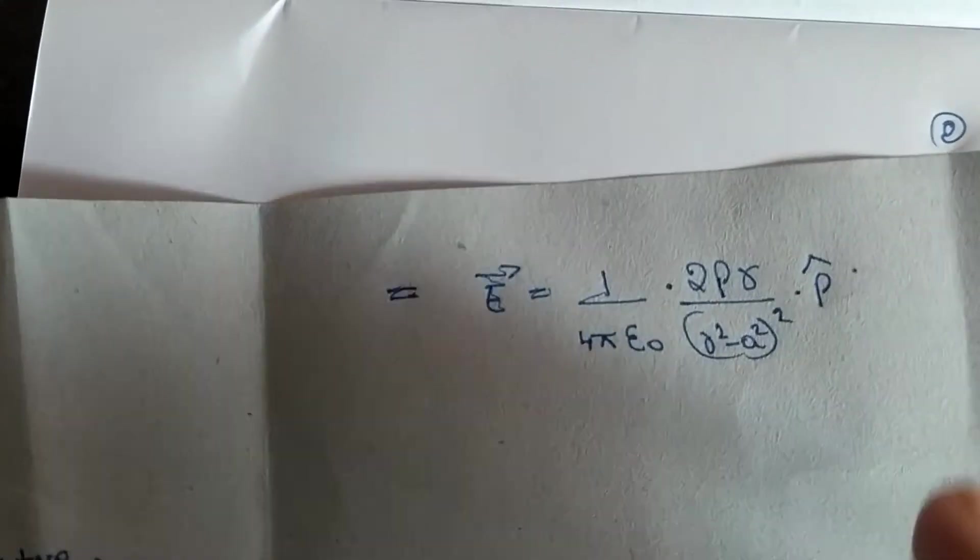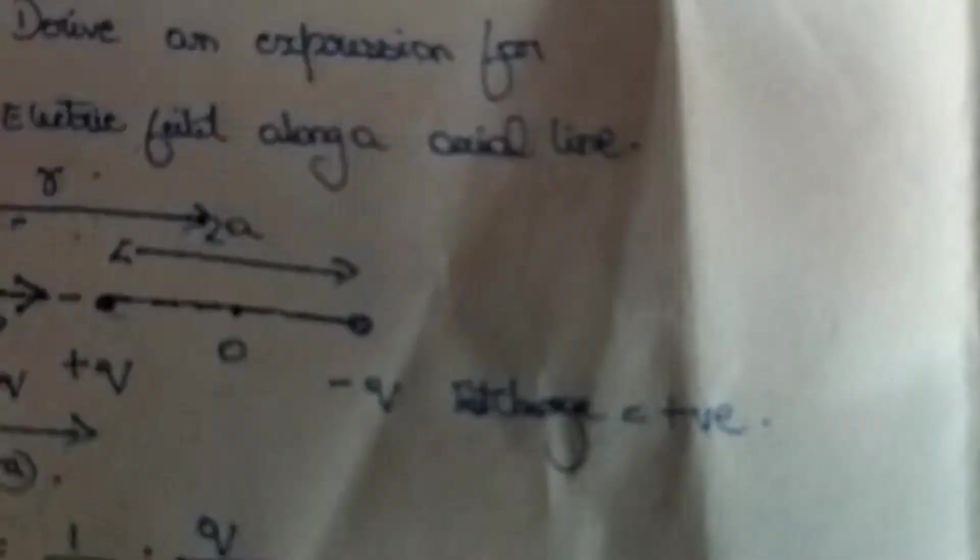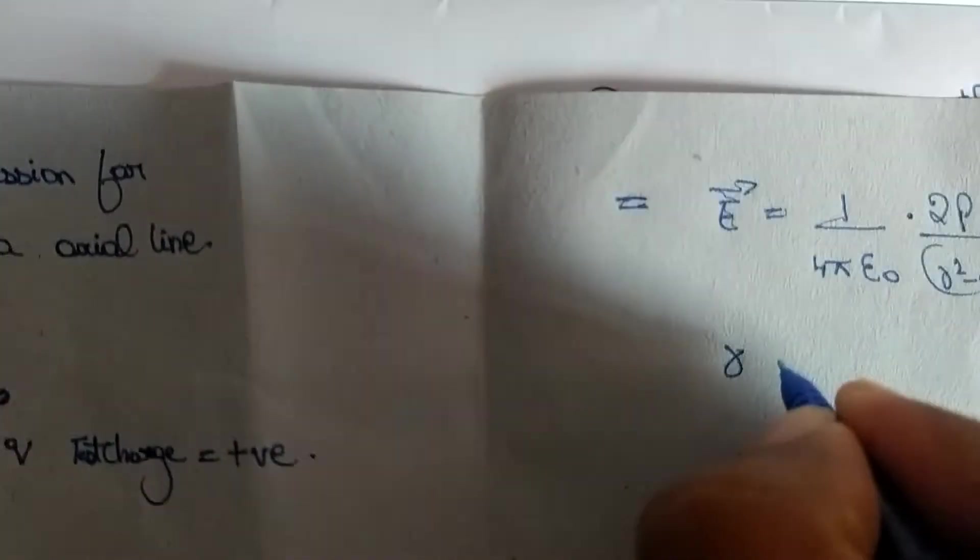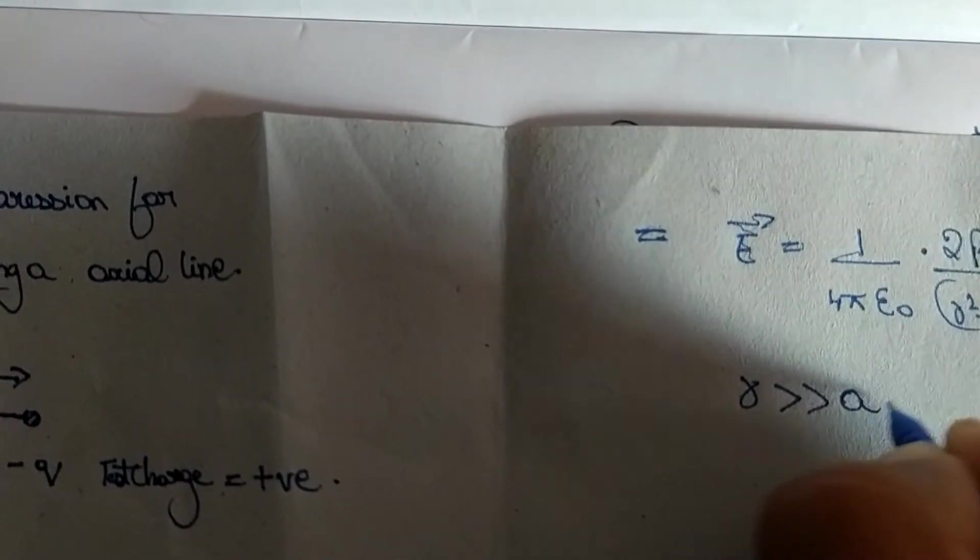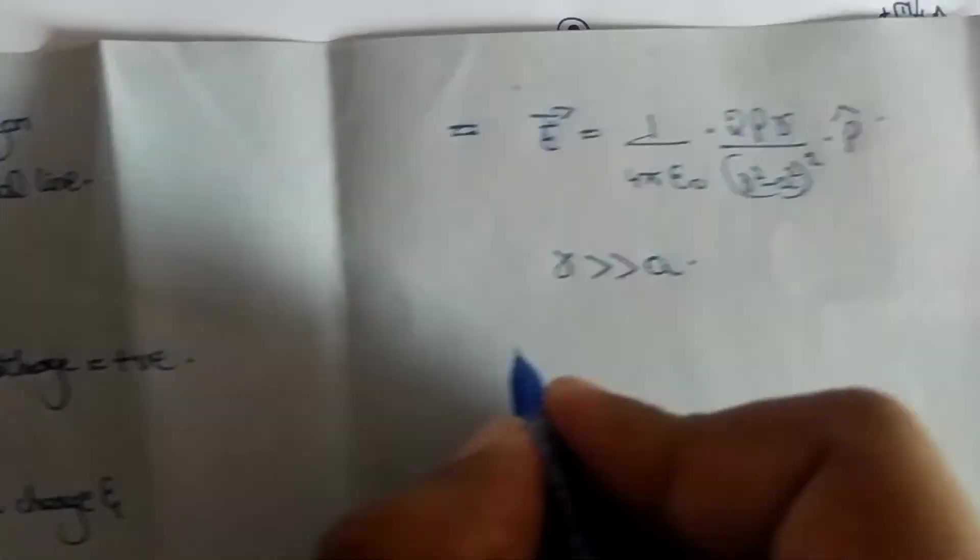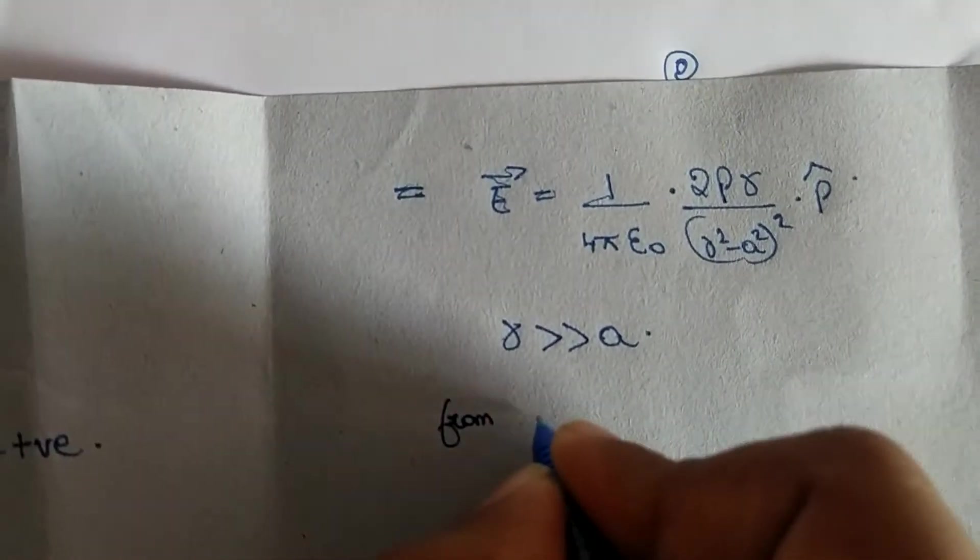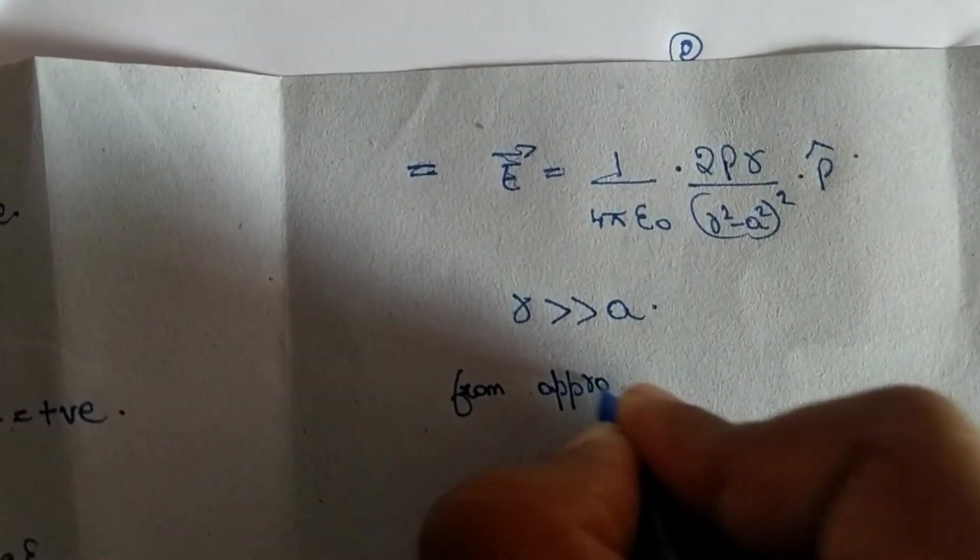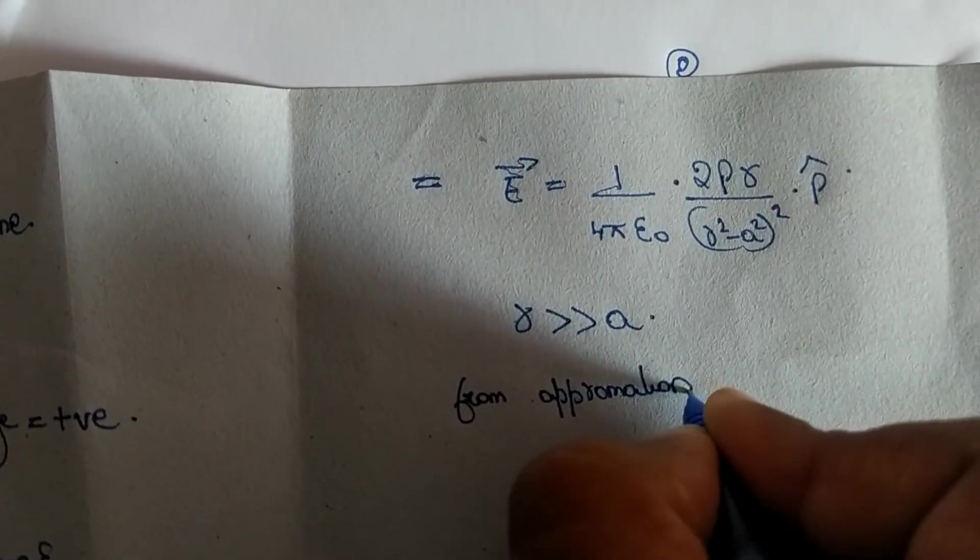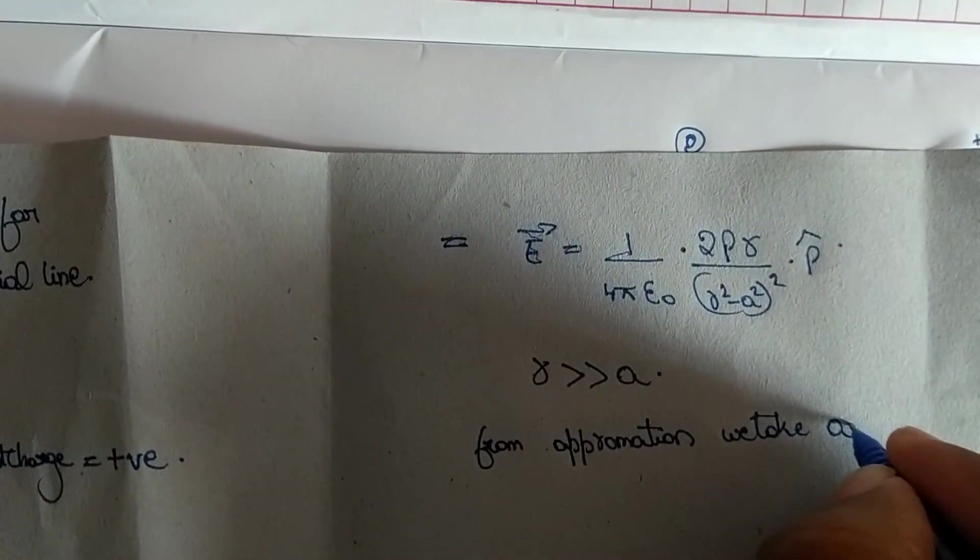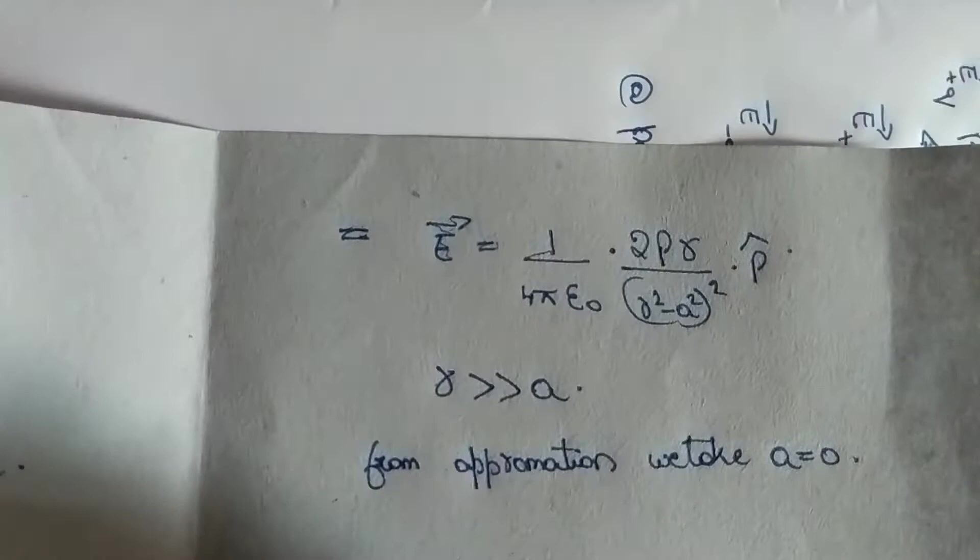From the diagram you can approximate that the distance r is very very greater than a. From approximation, for our convenience, we take a is equal to 0. We neglect that value actually.